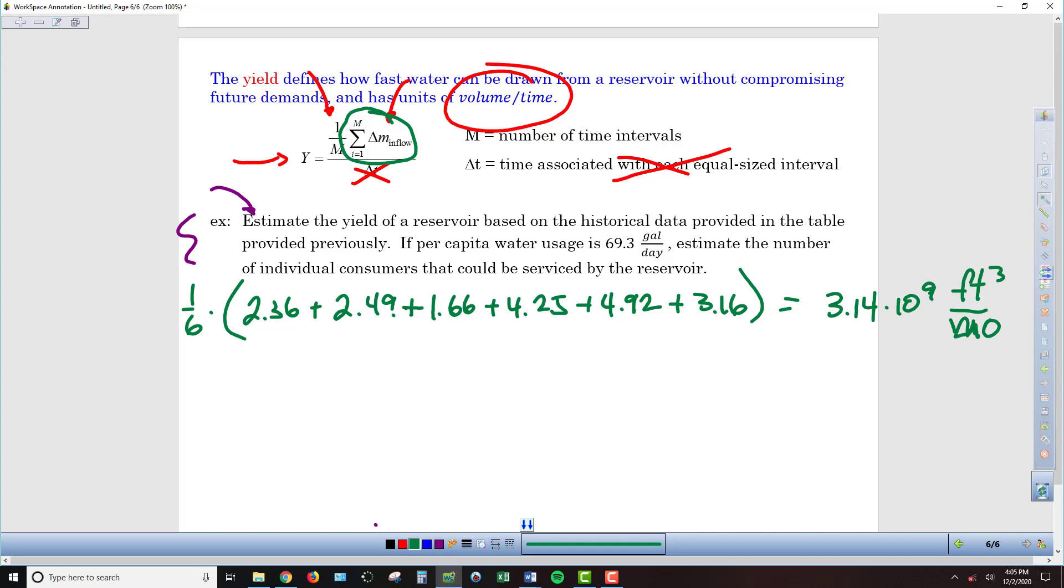So remember we're multiplying by that 1/6, which is 1 over the number of months. So that is our average monthly inflow. So that's the yield of this reservoir. If we're taking out that much on a monthly basis, then we're not depleting it. Even though some months we might take out more, some months we might take out less, but on average this is what we can take. But that's not the solution to this question.